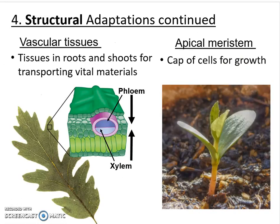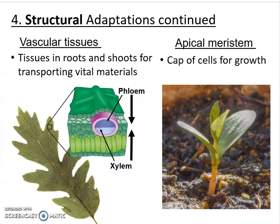Another interesting structural feature we see in plants is the formation of different kinds of tissues — a distinct difference when comparing algae with plants. One type of tissue is known as vascular tissue, similar to vascular tissue in animals where arteries and veins transport fluids throughout our bodies. For a plant, vascular tissues allow them to transport really important materials throughout the organism. We find two types: xylem and phloem. You can see from the arrows the general direction of transport. Phloem is going to be in the shoot and works its way down into the roots.